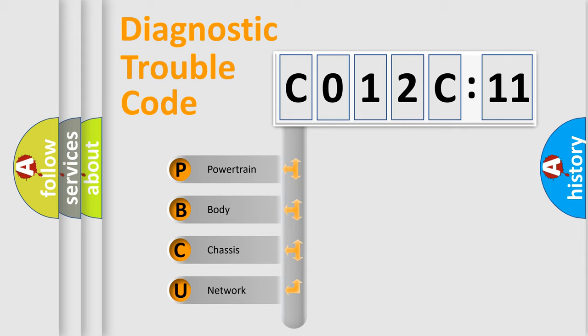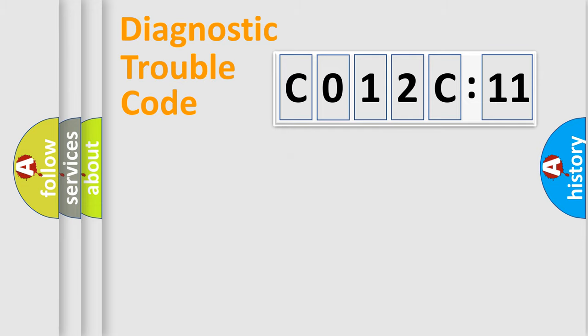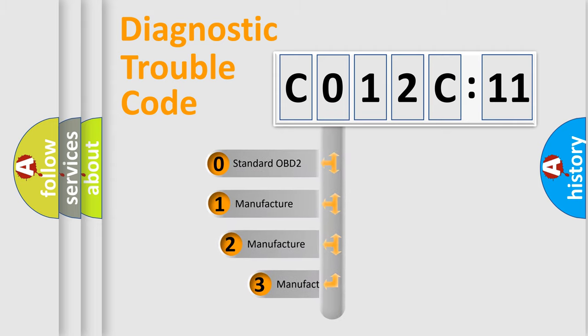We divide the electric system of automobile into four basic units: Powertrain, Body, Chassis, and Network. This distribution is defined in the first character code.